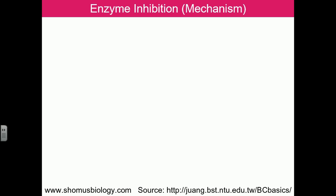Welcome back friends. Let us talk about the different types of enzyme inhibition. We will be seeing the enzyme inhibition mechanisms and the different types of graphs — the Michaelis-Menten plot as well as the double reciprocal plot — to understand how KM and Vmax change in different types of enzyme inhibition.